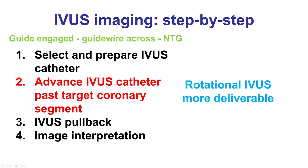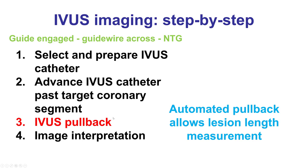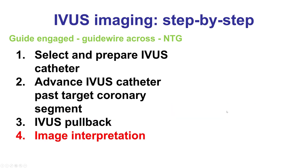As discussed, delivery of the IVUS catheter is harder for the phased array Eagle Eye catheter, whereas the rotational IVUS catheters are more deliverable because of their lower profile. The third step is to perform a pullback across the coronary area of interest. The disadvantage of the Eagle Eye is that it is hard to perform a timed pullback and requires a specialized pullback device, whereas automated-speed pullback can be done for all rotational IVUS catheters, giving the advantage of allowing accurate measurements.